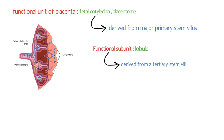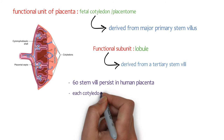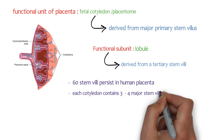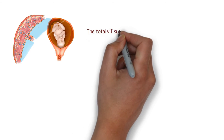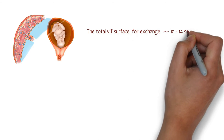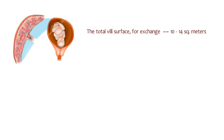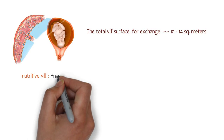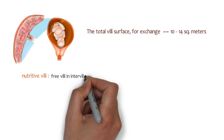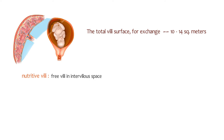About 60 stem villi persist in the human placenta. Thus, each cotyledon contains about 3 to 4 major stem villi. The total villous surface for exchange varies between 10 m² to 14 m² approximately. While some of the villi are anchoring the placenta to the decidua, the majority are free within the intervillous space — they are known as nutritive villi.